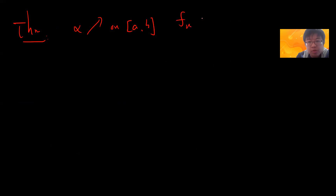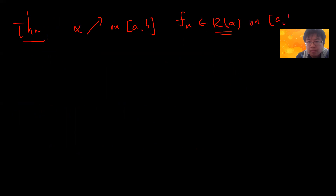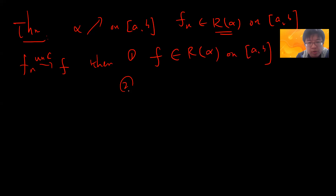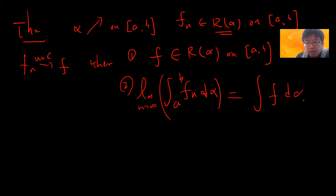Now we prove the uniform convergence and integral theorem. Let alpha be monotone increasing — the standard setting — and let fn belong to the Riemann integral with respect to alpha on [a, b]. Suppose fn converges uniformly to f. Then we need to prove two things: first, that f is Riemann integrable, and moreover, the limit as n goes to infinity of the integral from a to b of fn d-alpha equals the integral from a to b of f d-alpha.